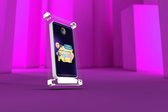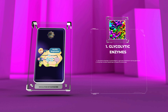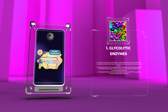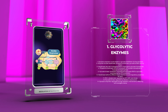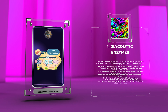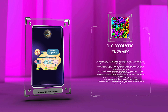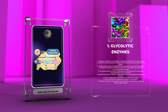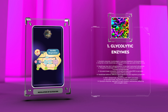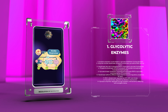Glycolytic enzymes are crucial players in the breakdown of glucose during glycolysis. This pathway consists of a series of enzymatic reactions, each mediated by specific enzymes. These enzymes include hexokinase, phosphofructokinase, and pyruvate kinase, among others. Let's discuss each one in detail.